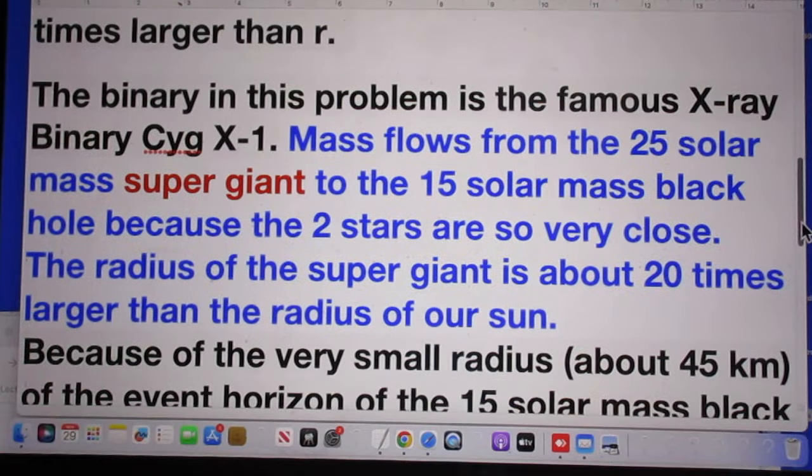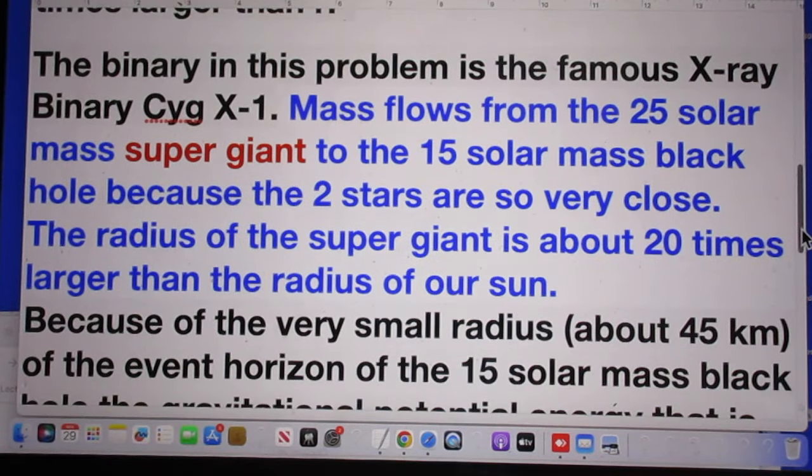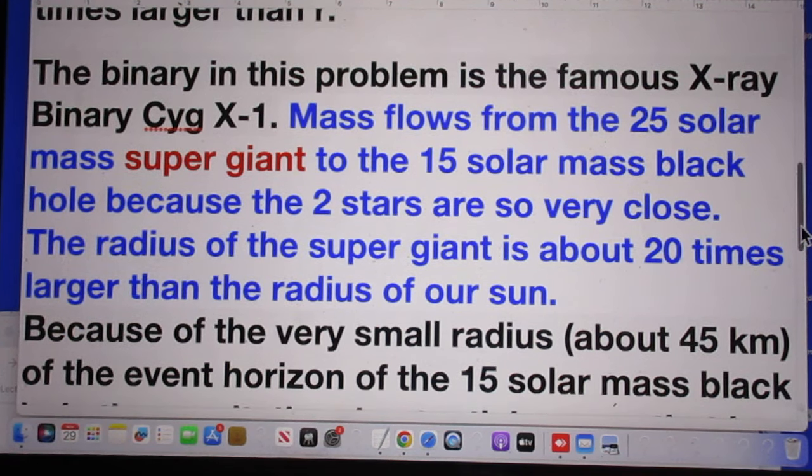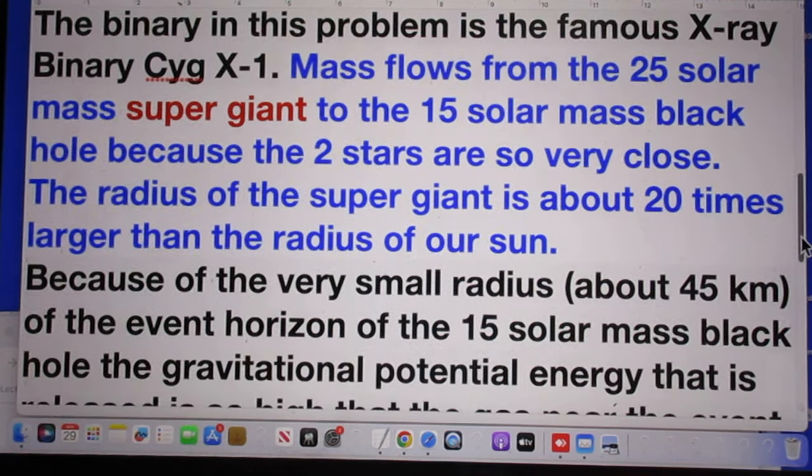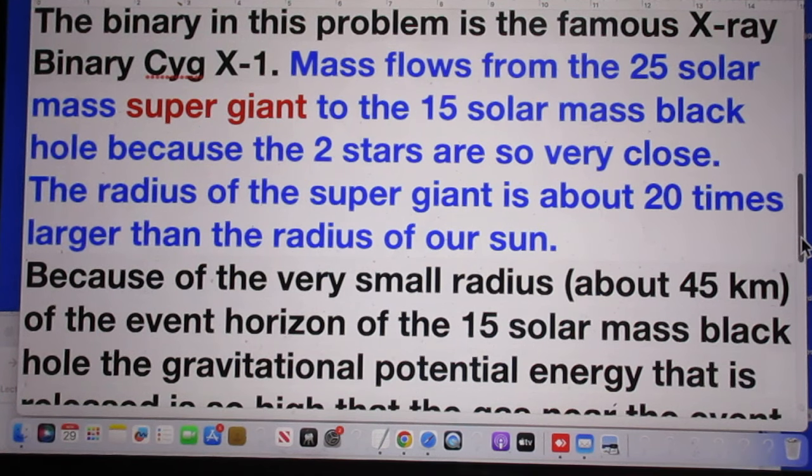The binary in this problem is the famous X-ray binary Cygnus X-1. Mass flows from the 25 solar mass supergiant to the 15 solar mass black hole because the two stars are so very close.